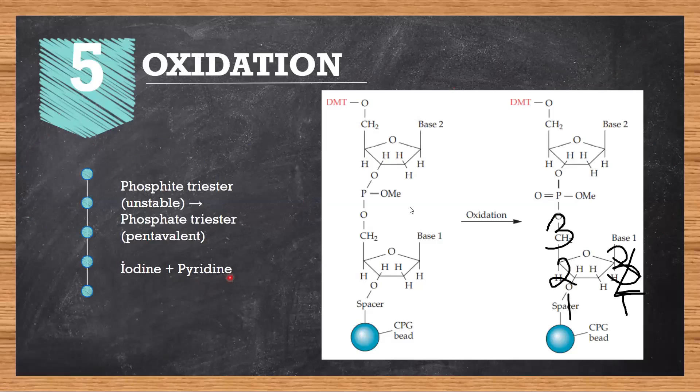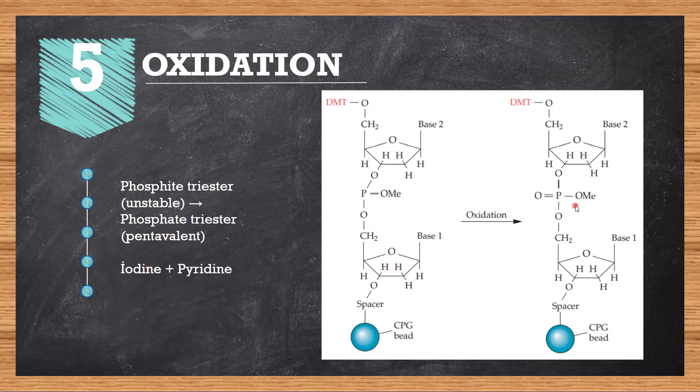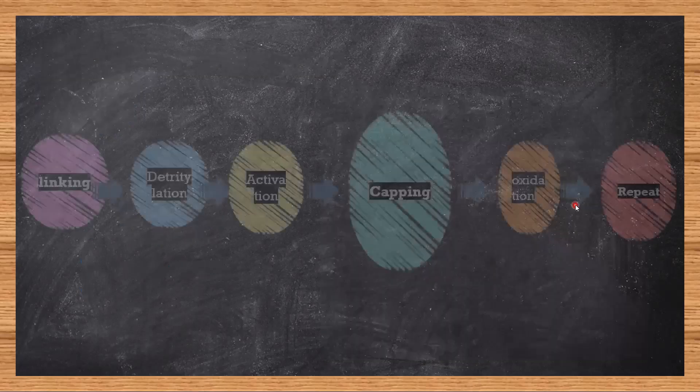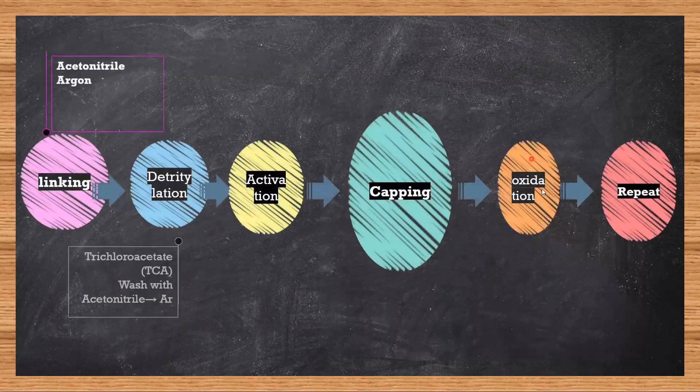This oxidation is carried out by using two reagents: iodine and pyridine. Oxidation in presence of iodine and pyridine will give this structure. See, this triester has got converted into a pentavalent molecule which is now very stable. Now you can keep continuing this process to finally get the long chain oligonucleotide.